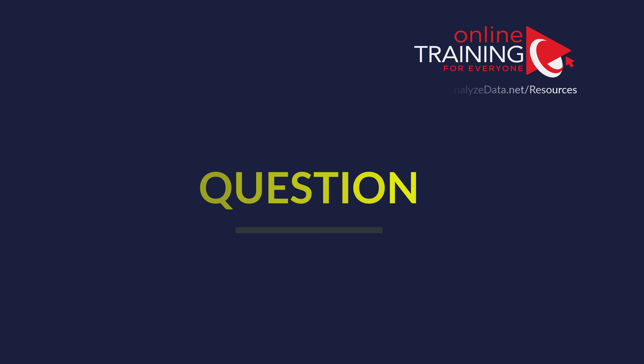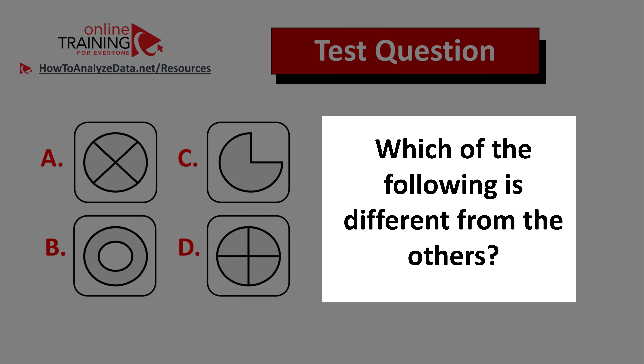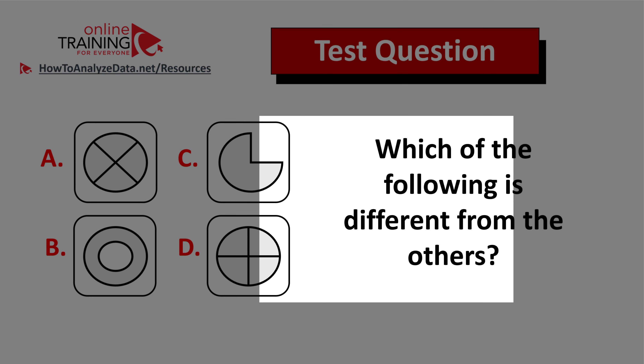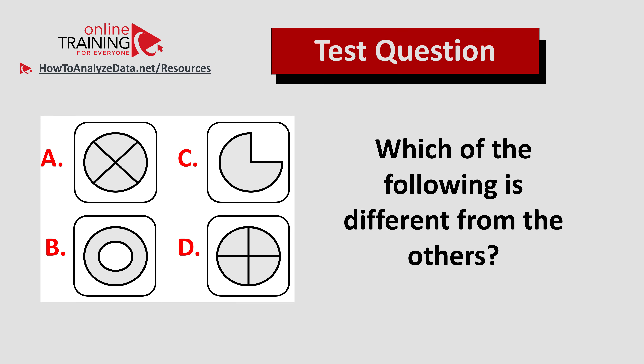Here's a tricky question from the real test — at first the answer seems obvious, but it may not be. Which of the following is different from the others? You're presented with four different choices: a, b, c, and d. Give yourself 10 to 15 seconds, pause the video, and see if you can come up with the answer.